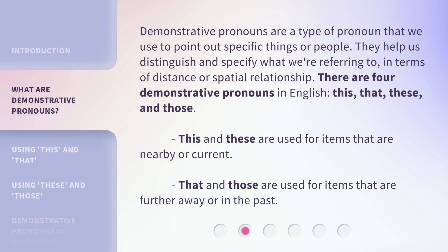Demonstrative pronouns are a type of pronoun that we use to point out specific things or people. They help us distinguish and specify what we're referring to in terms of distance or spatial relationship. There are four demonstrative pronouns in English: this, that, these, and those. This and these are used for items that are nearby or current, while that and those are used for items that are further away or in the past.